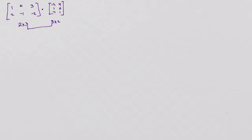These numbers match, so we can multiply them, and my answer will be a 2 by 2 matrix. The meaning of the first matrix's rows will be the meaning of the answer rows, and the meaning of the second matrix's columns will be attached to the answer columns. You'll see that when we get into an actual example problem — you have to know where to put all your meanings. So let's just multiply this.